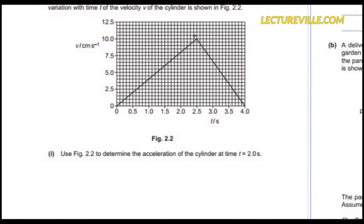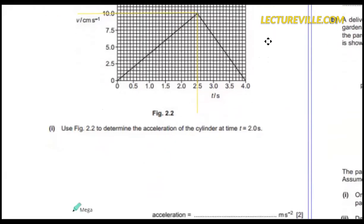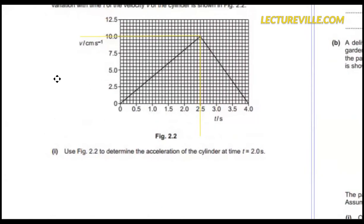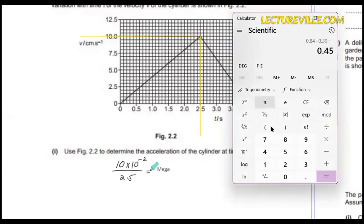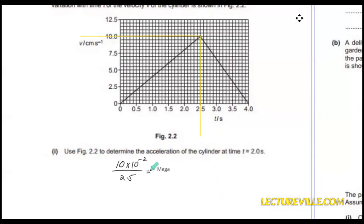So this is exactly 10 centimeters per second and this one is 2.5 seconds. Acceleration will be rise over run. Rise will be 10 centimeters per second, so if I convert it into meters it will become 10 into 10 to the power minus 2 meters per second. That is rise and run will be 2.5. 0.1 divided by 2.5 equals 0.04 meters per second squared.